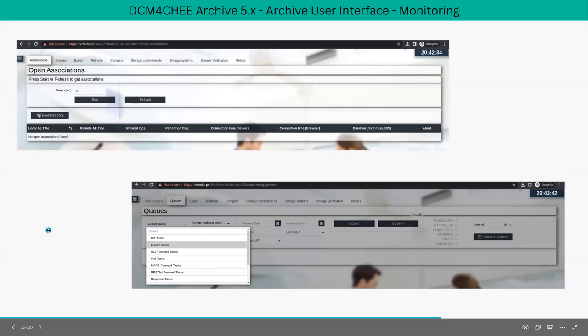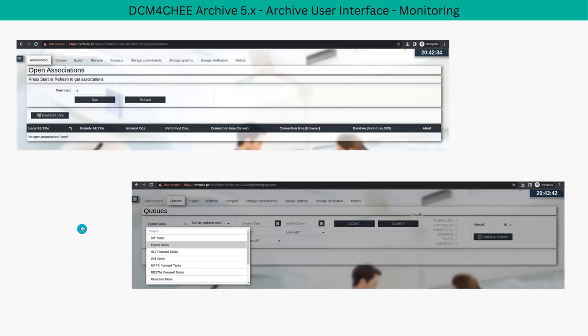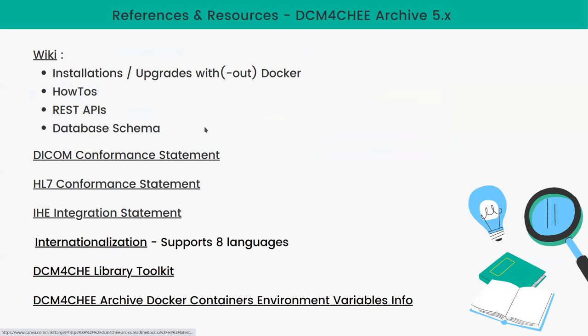On the monitoring page, you can work with the archive's asynchronous task management system as an administrator — monitoring, rescheduling, and cancelling tasks. It also has a tab for monitoring open DICOM associations with external systems. Finally, here are the most important resource links: conformance statements, the IHE integration statement covering supported standards and profiles, REST APIs, database schema, how-tos explaining various features, and installation and upgrade guides. The archive supports internationalization, currently with eight languages. Links for the library toolkit, Docker container environment variables, and community forums are all shared in the chat.